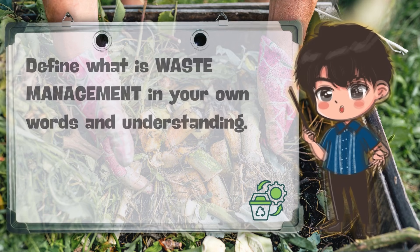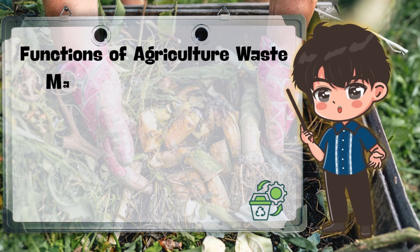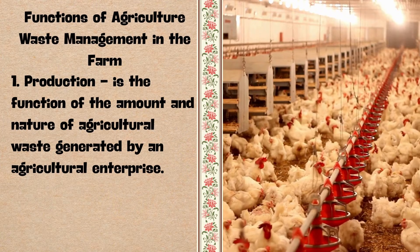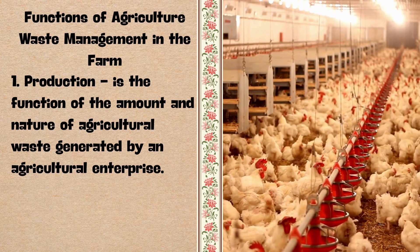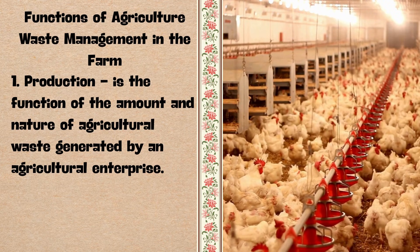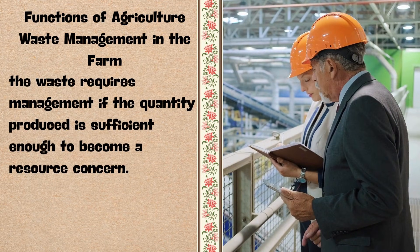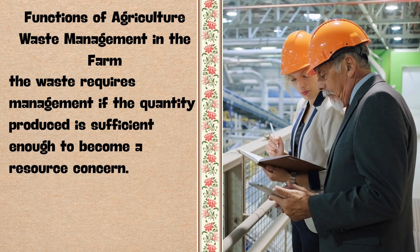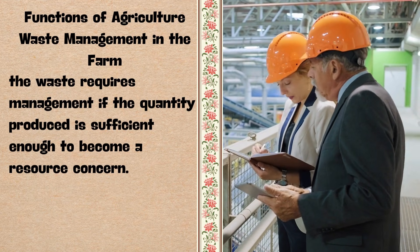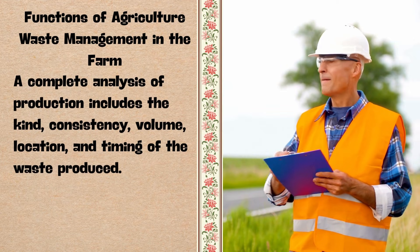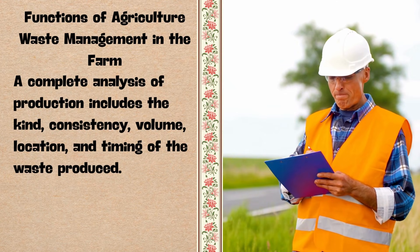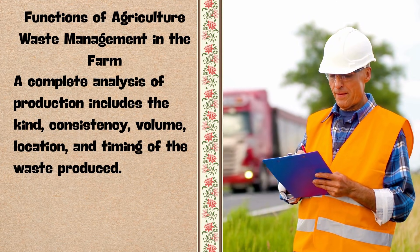There are six basic functions of agricultural waste management in the farm. 1. Production — it is the function of the amount and nature of agricultural waste generated by an agricultural enterprise. The waste requires management if the quantity produced is sufficient enough to become a resource concern. A complete analysis of production includes the kind, consistency, volume, location, and timing of the waste produced.